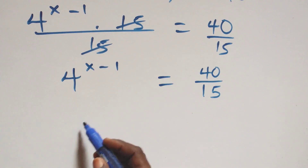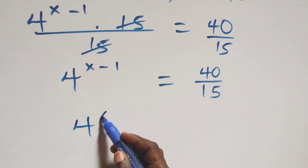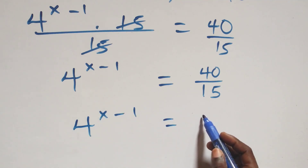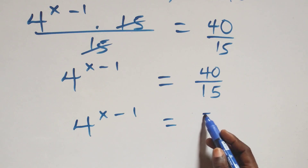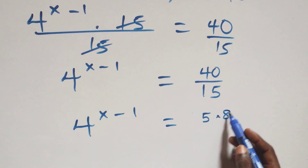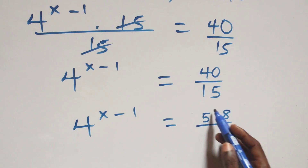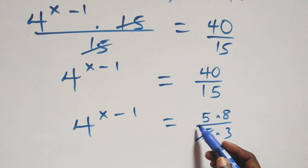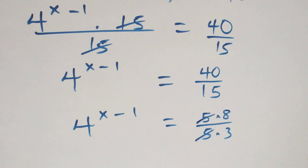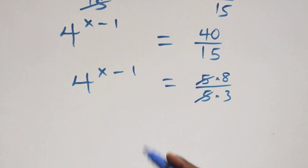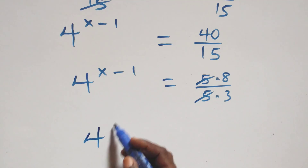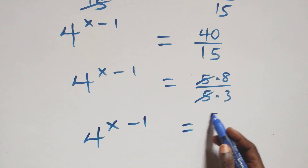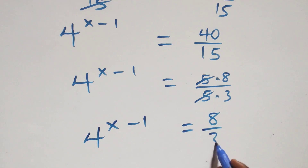We rewrite 4 raised to the power x minus one equals 40 over 15, which simplifies to 8 over 3.